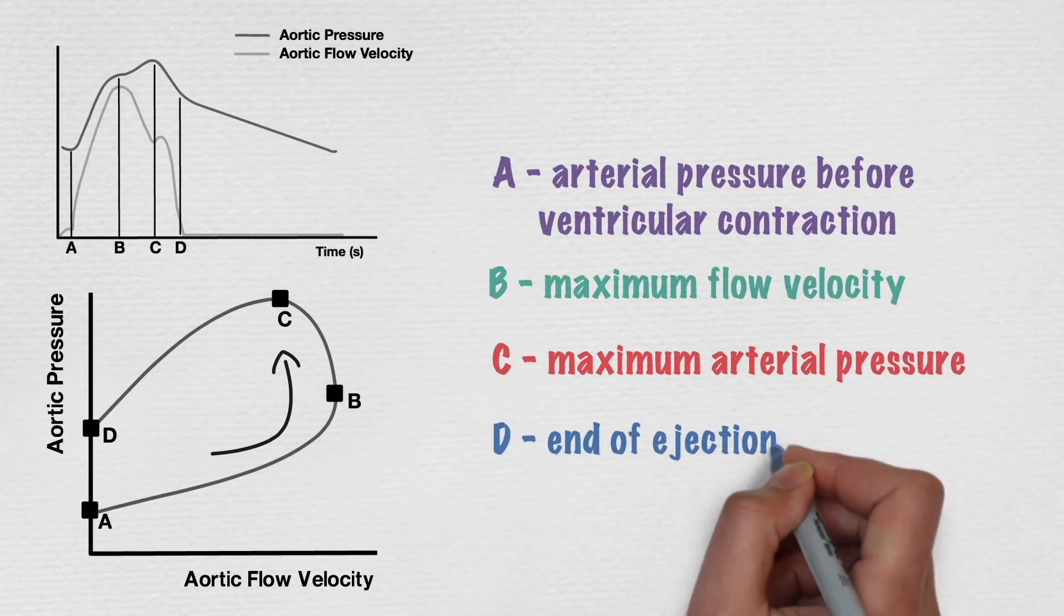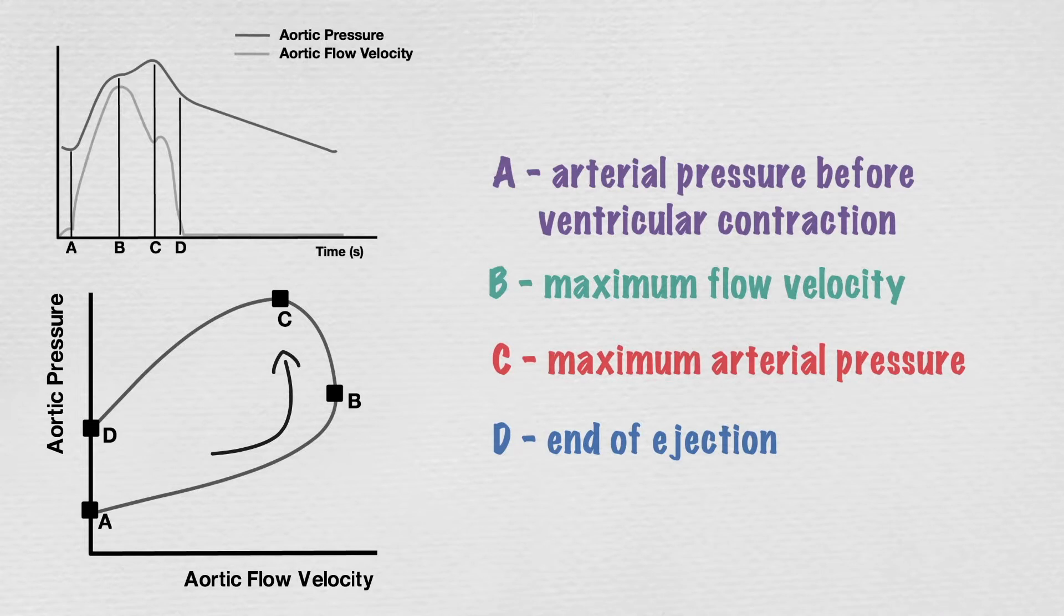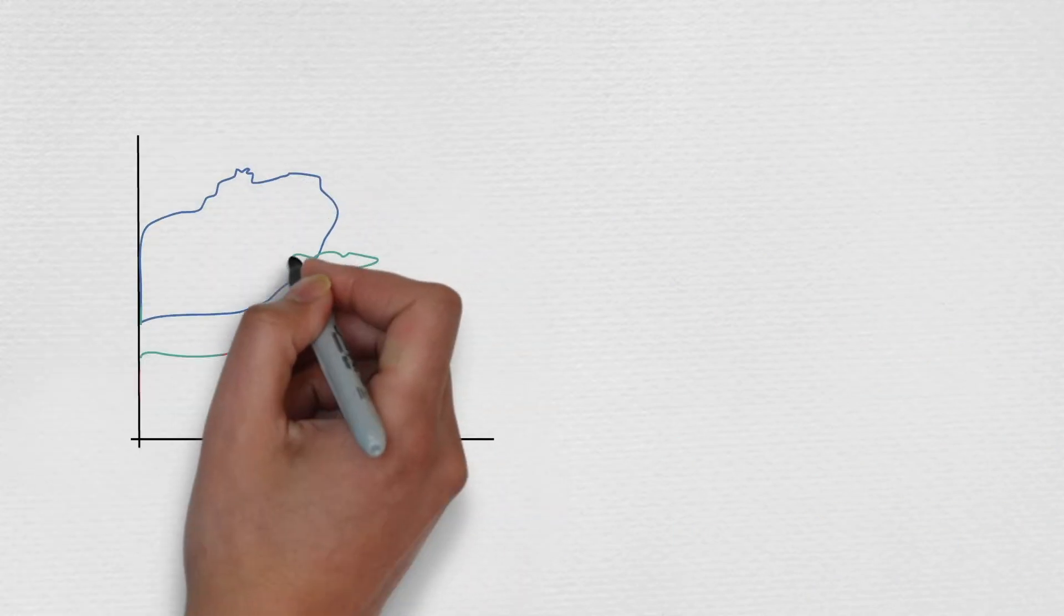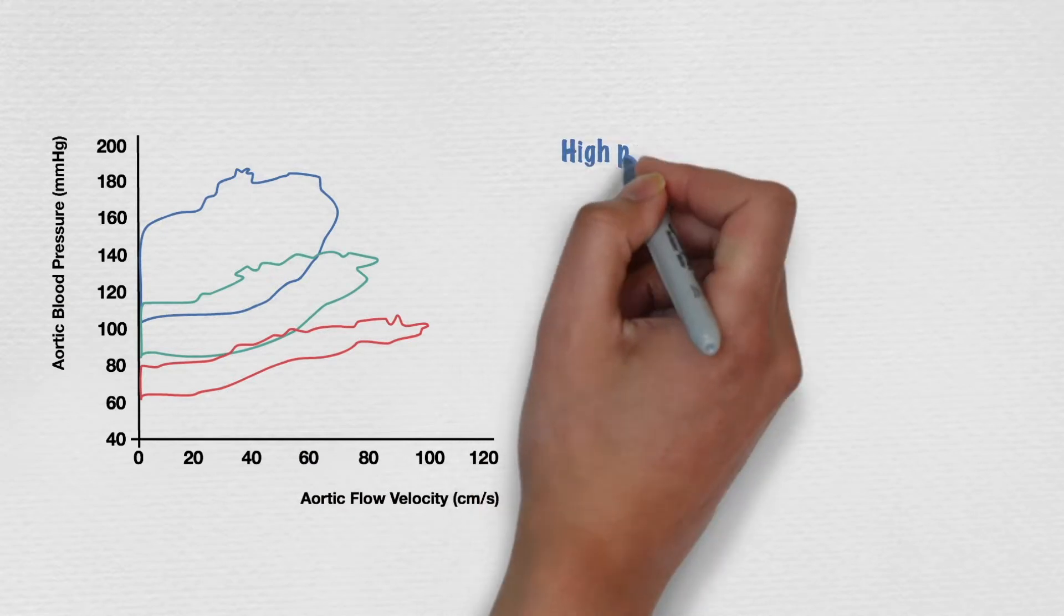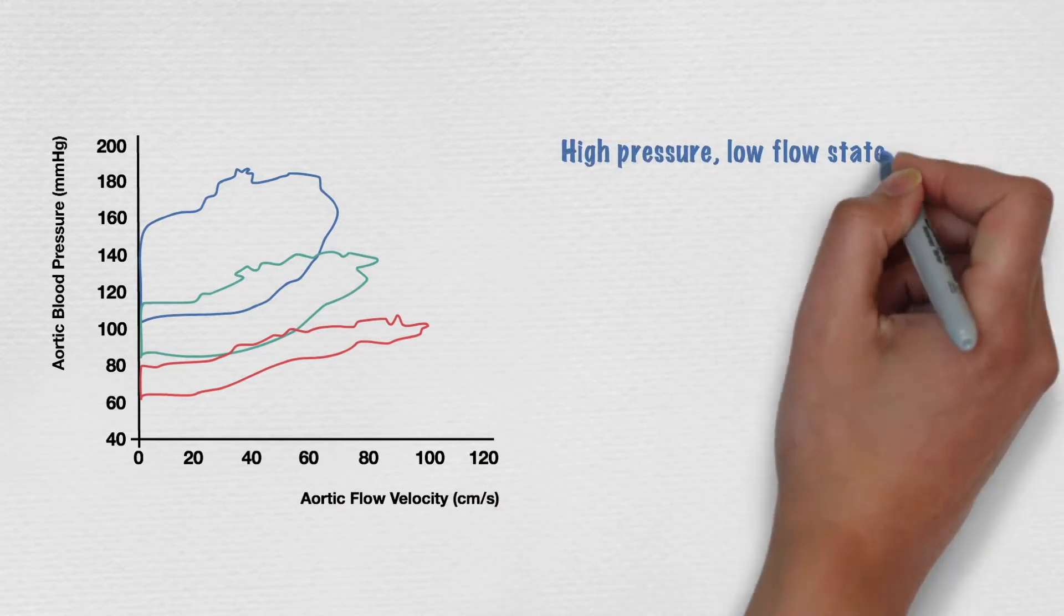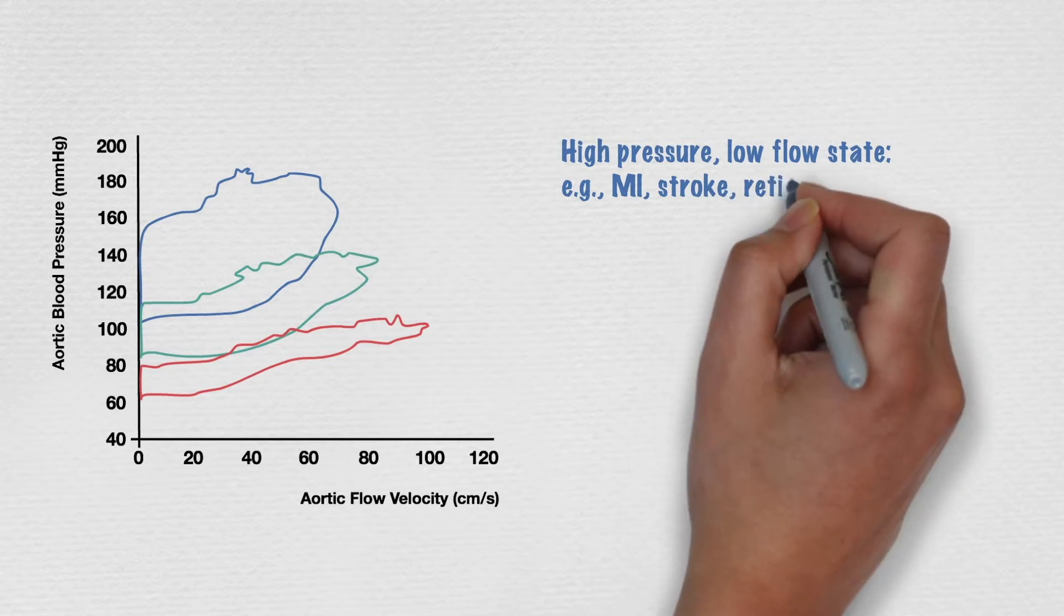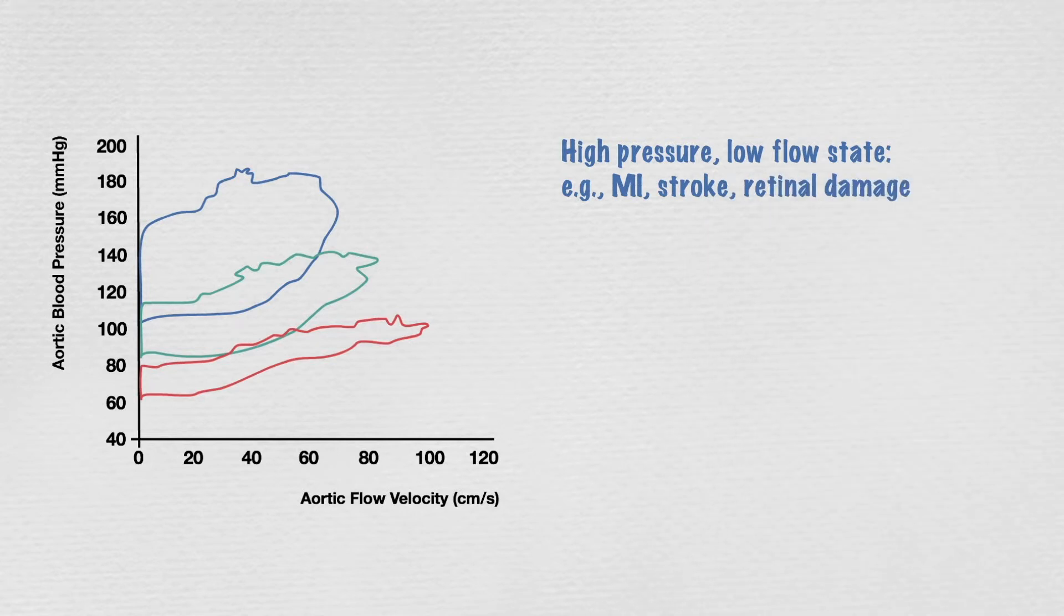The shape of the loop varies depending on vascular resistance and other patient characteristics. In this example, the blue loop represents a high pressure and low flow state, placing patients at risk of conditions such as myocardial infarction, stroke, and retinal damage.